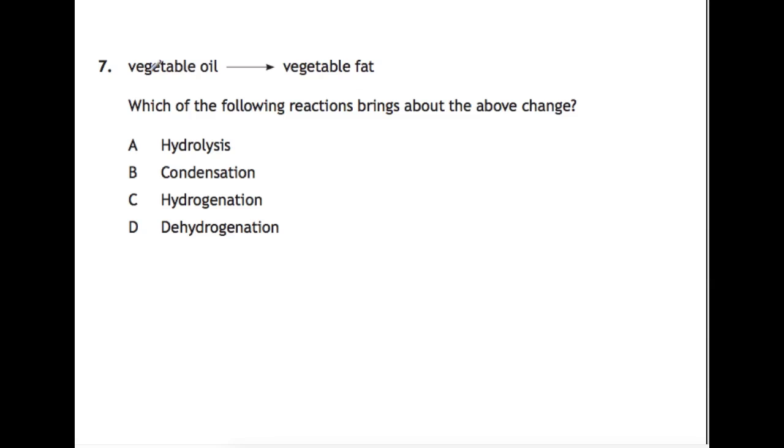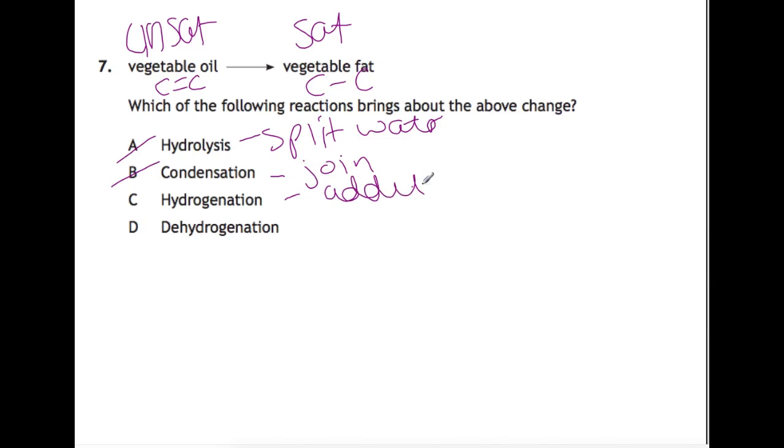Question 7. We have a vegetable oil going to vegetable fat which the following reactions brings about the above change. You need to know definitions for this and you also need to know the structure of an oil versus fat. So an oil is unsaturated whereas a fat is saturated. So here we have double bonds and here we have single bonds. Hydrolysis is to split something up with water. We're not doing any splitting so it can't be hydrolysis. Condensation is where we're joining things so we're not joining anything here. Hydrogenation is the addition of hydrogen. And dehydrogenation is the removal of hydrogen. When you add hydrogen you need to have a double bond to do it. So this is what we would do to do this one. Going backwards from fat to oil would be dehydrogenation.